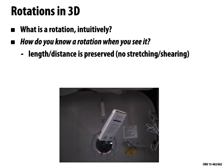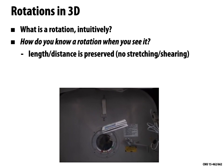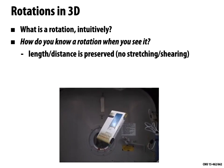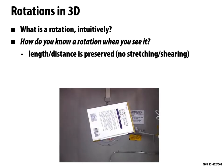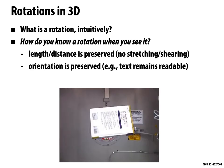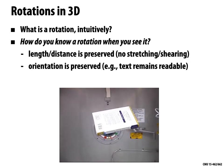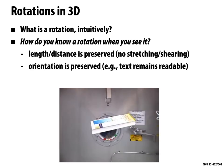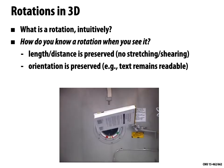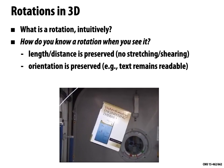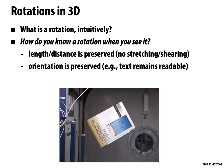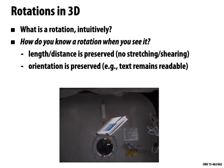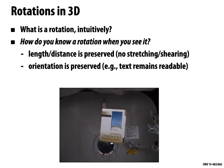So the distance between two corners of the book remains the same as we rotate it — there's no stretching, there's no shearing. Also orientation is preserved, so text remains readable. I can still read the text from left to right and it makes sense. This is different from what happens if I hold up the book in the mirror — the text is flipped around. This is a reflection.